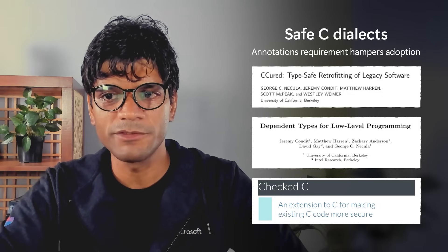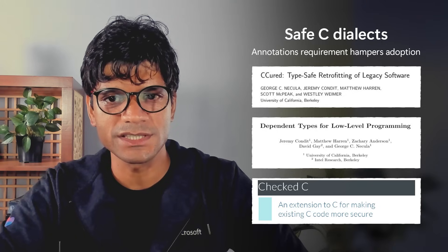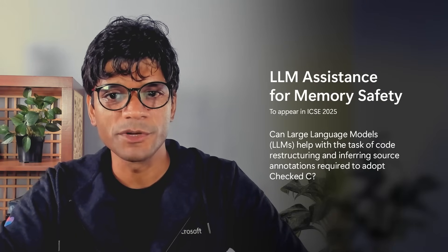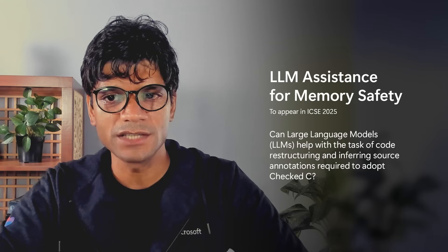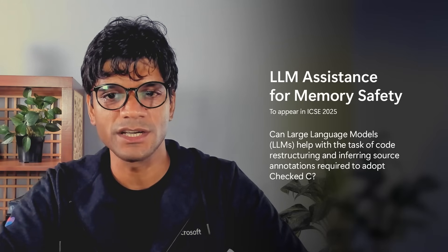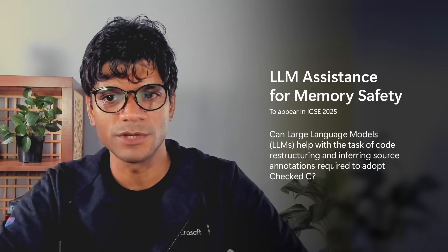In general, application of formal verification to real software faces the same challenge. In our paper, we explore the use of pre-trained large language models to help with the task of code restructuring and inferring source annotations required to adopt Check C.